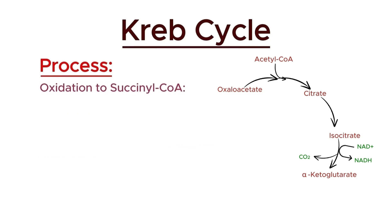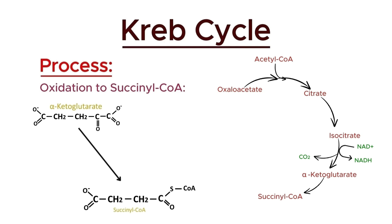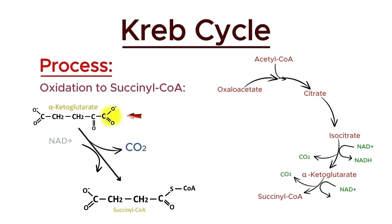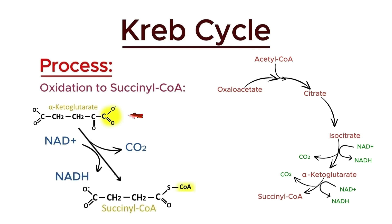In the fourth step of the Krebs cycle, alpha-ketoglutarate is further oxidized and decarboxylated to form succinyl-CoA. This reaction is catalyzed by the alpha-ketoglutarate dehydrogenase complex. During this step, another molecule of carbon dioxide is released, and NAD+ is reduced to NADH. Additionally, coenzyme A is added to the remaining four-carbon molecule to form succinyl-CoA. This step generates another NADH molecule and prepares the substrate for subsequent reactions in the cycle.